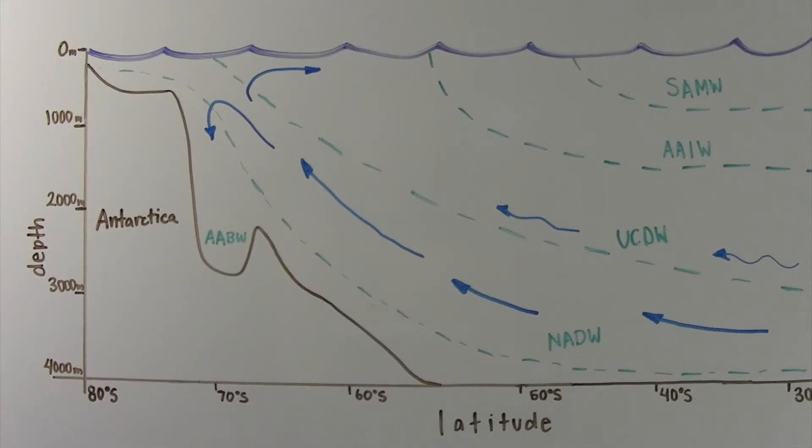Once in the colder, less salty Antarctic, this now dense water sinks down to join the Antarctic bottom water forming the lower cell.